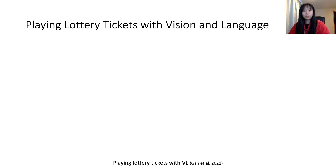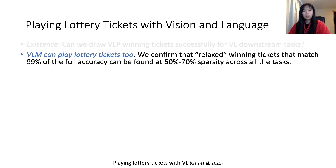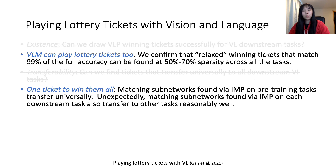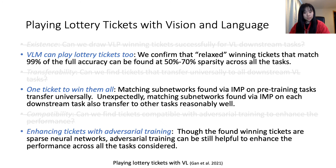Here is a brief summary of their findings. At 50% to 70% sparsity across all tasks, a winning ticket can be found that matches 99% of the full accuracy. The winning ticket can be transferred between pre-training and downstream fine-tuning, and also among downstream tasks. Additionally, sparse neural networks can still be enhanced via adversarial training while maintaining sparsity.